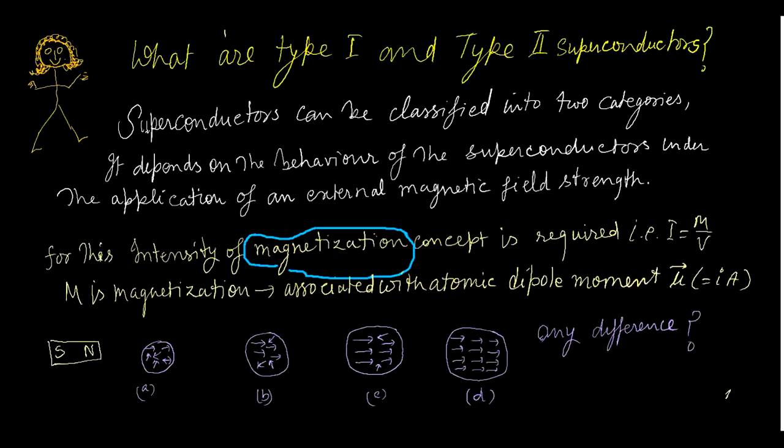In this video lecture I will discuss the Type 1 and Type 2 superconductors — how to identify them, and the behavior these two superconductors show. I will explain this with the help of two different graphs associated with Type 1 and Type 2 respectively.